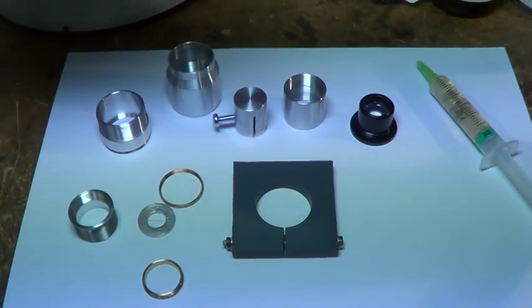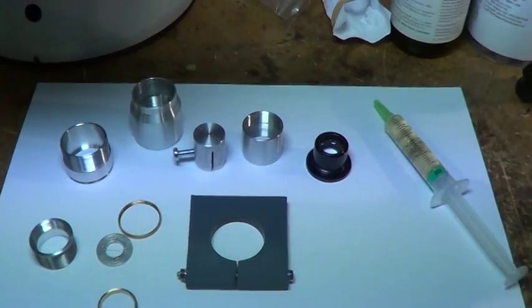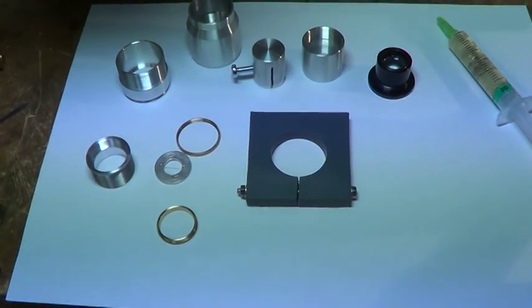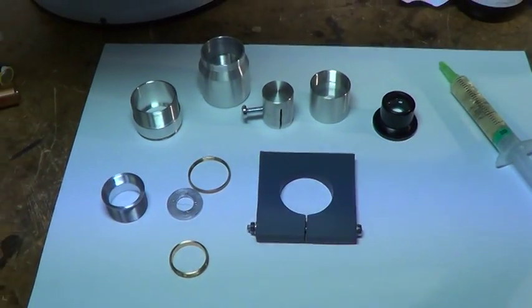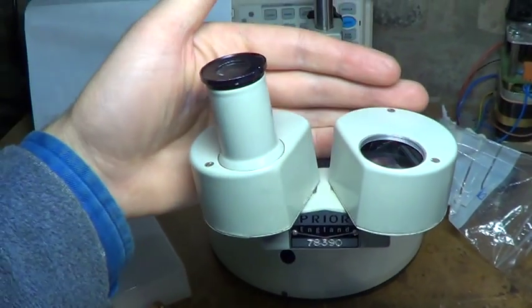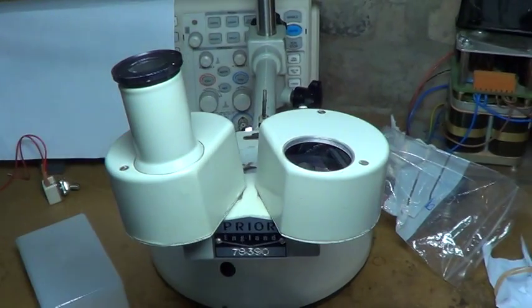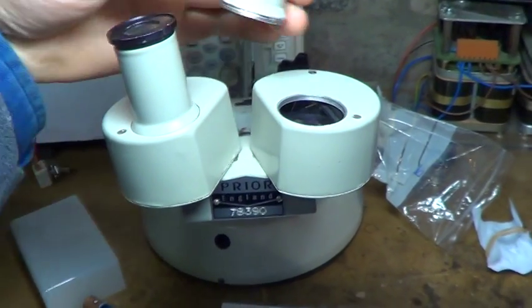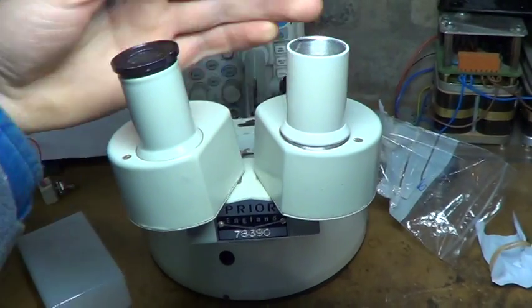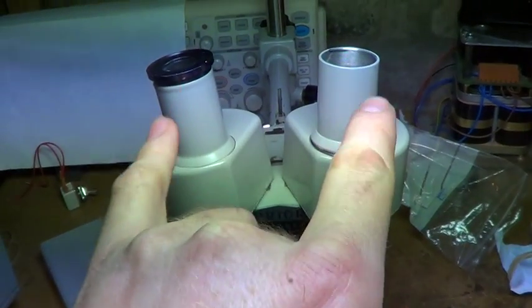This is a quick video of the assembly and installation of the adjustable eyepiece mount which I've just completed making. I made it for this stereo microscope because the eyepiece tube which came with it originally was just a fixed tube and allowed no adjustment for different strengths between the eyes.